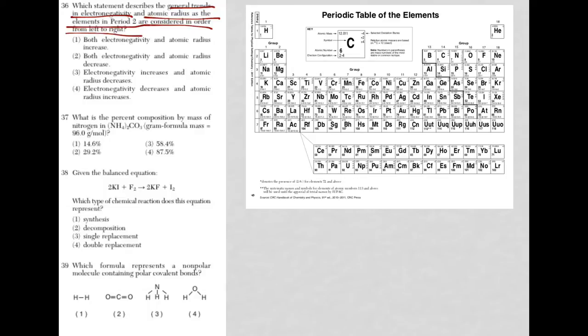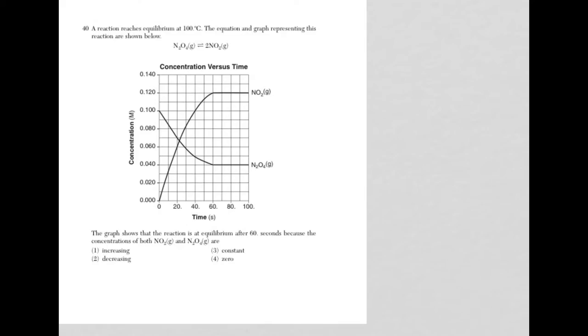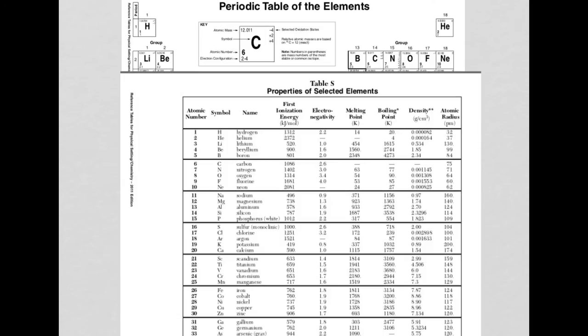So we're starting with 36. It says, which statement describes the general trends in electronegativity and atomic radius as the elements in period 2 are considered in order from left to right? So I put the periodic table here. Here's period 2, it's the row. I need to know what's going on with electronegativity and atomic radius. I need to go to reference table S. So what am I dealing with? Lithium really through neon. And let me flip to it. Here they are. Lithium through neon, that's elements 3 through 10.